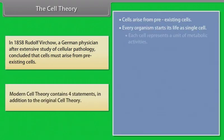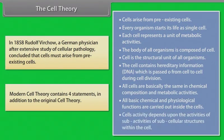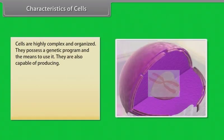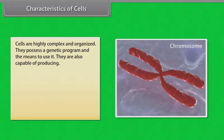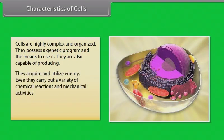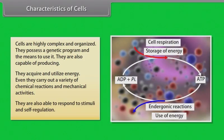Modern cell theory contains four statements in addition to the original cell theory. Cells are highly complex and organized. They possess a genetic program and the means to use it. They are also capable of reproducing. They acquire and utilize energy, carry out a variety of chemical reactions and mechanical activities, and are able to respond to stimuli and self-regulation.